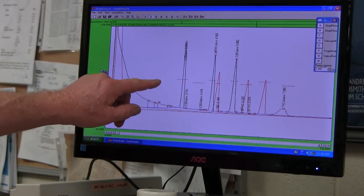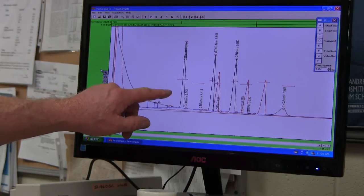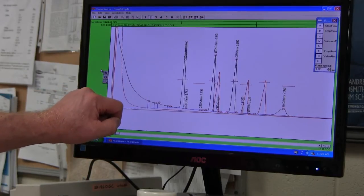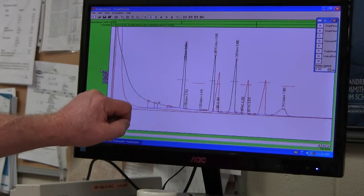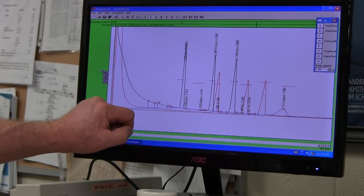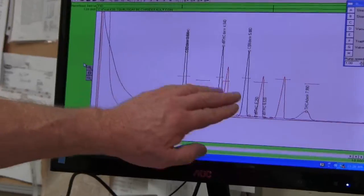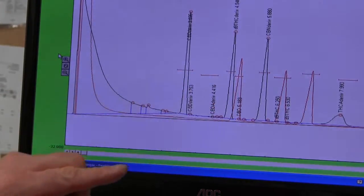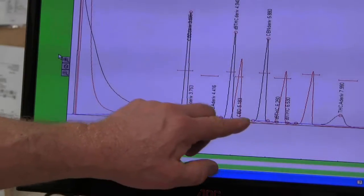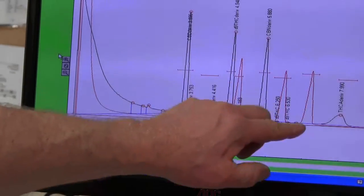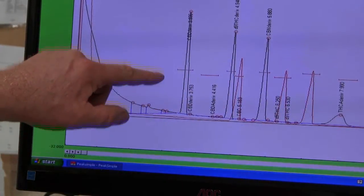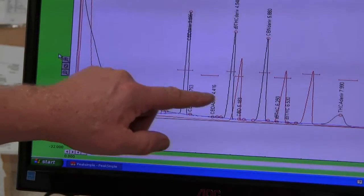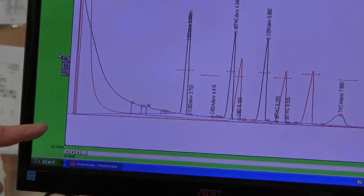So the chromatogram that results when we inject the derivatized cannabinoid standard, which contains CBD, delta-9, and CBN, we get the peaks shifted earlier in time than they were originally when they were underivatized. The red shows the underivatized peaks. The black shows the derivatized peaks. And you can see that they come out at an earlier retention time.